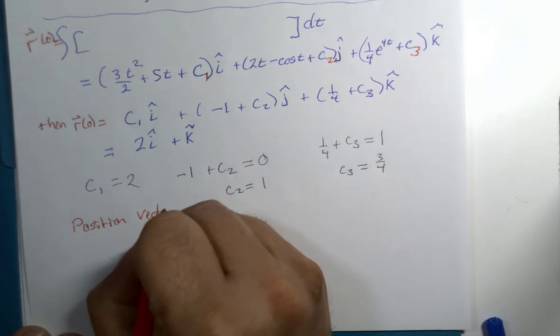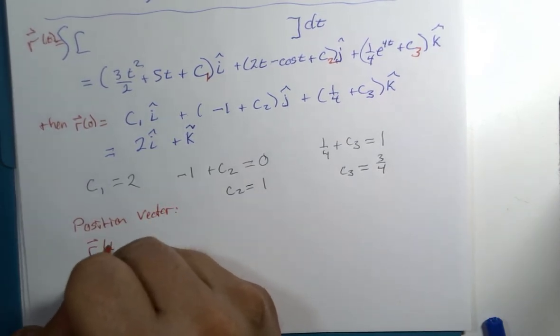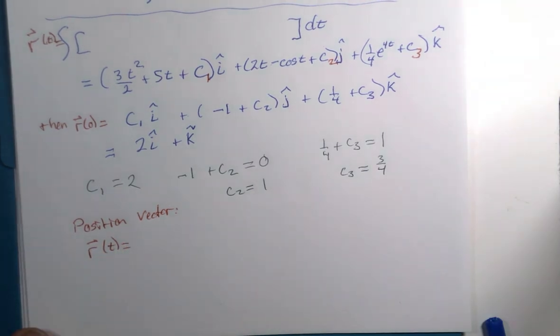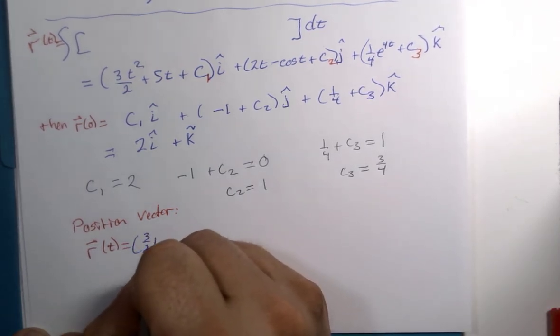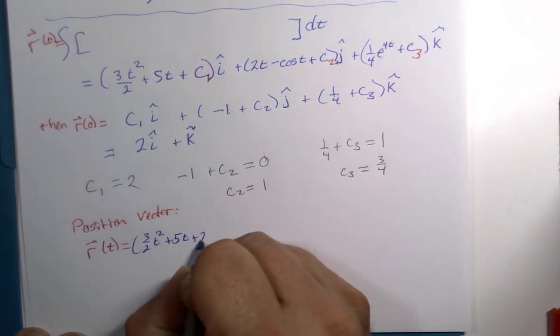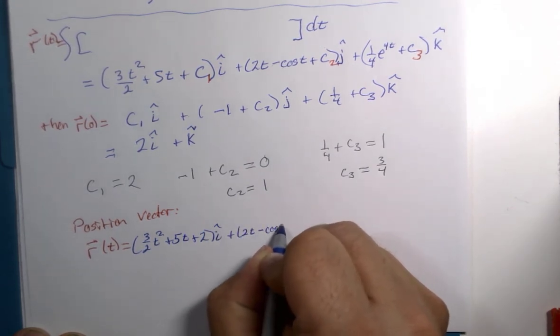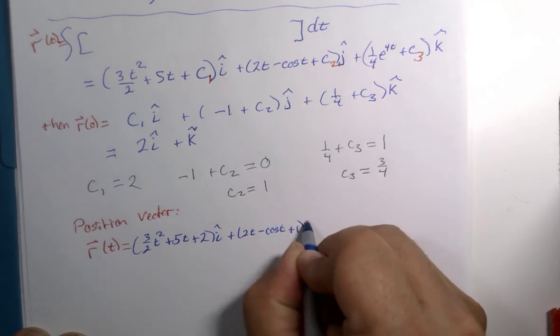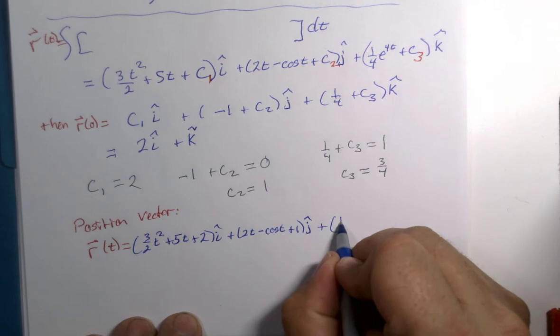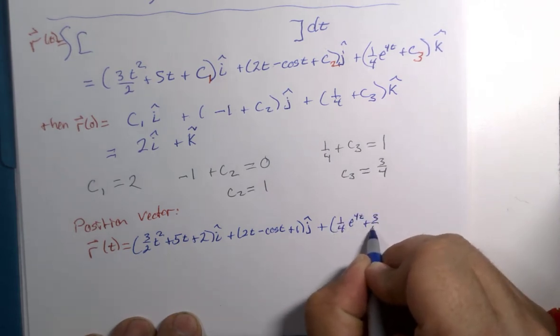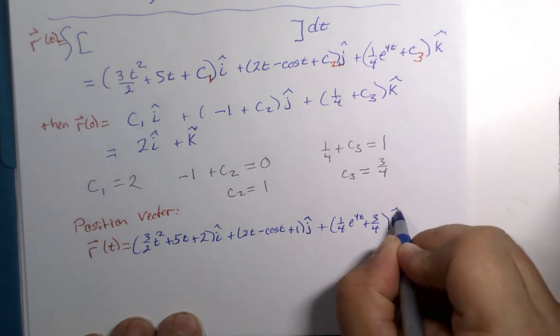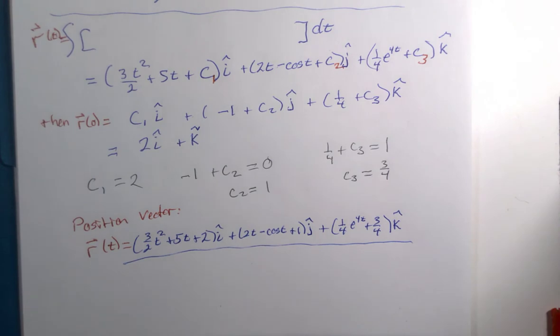Position vector r of t. I guess I should stick with my i, j, k notation here. 3 halves t squared plus 5t plus 2i plus 2t minus cosine t plus 1j. Plus 1 fourths e to the 4t plus 3 fourths k.